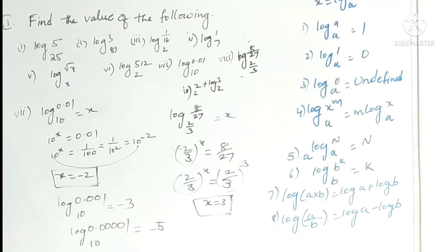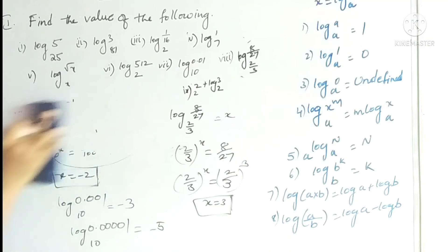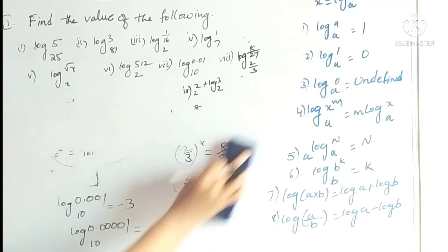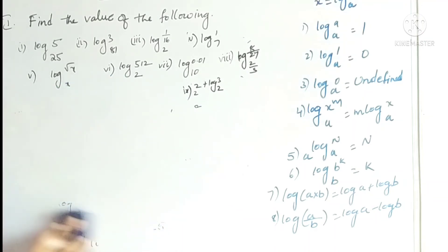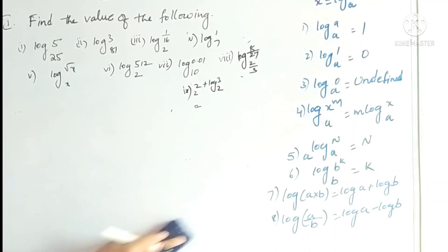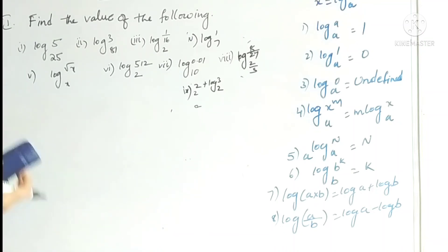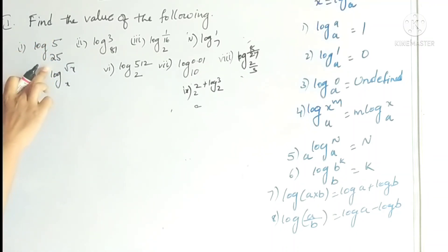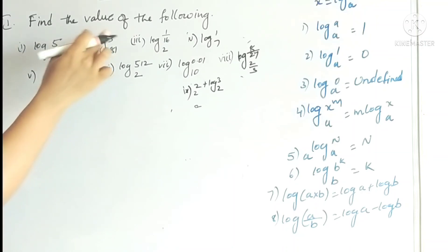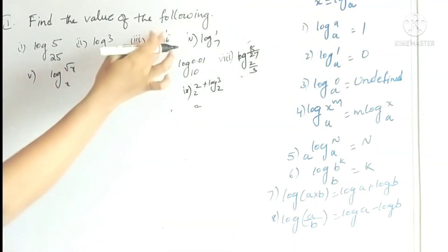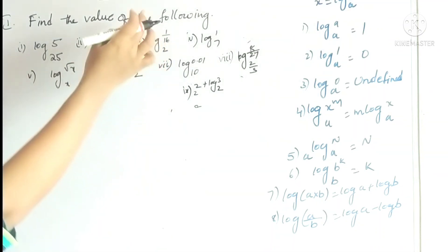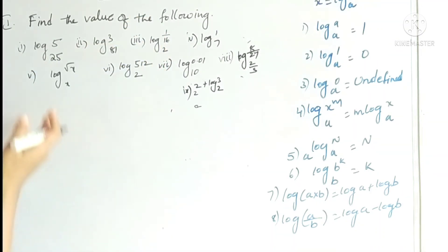Writing steps is important for scoring marks in exams. Intuitively: how many times must 25 be raised to get 5? Square root, so 1/2. How many times must 3 be raised to get 81? Four times, so 1/4. For 1/16, it's −4 because it's the inverse. For √x base x, it's 1/2.